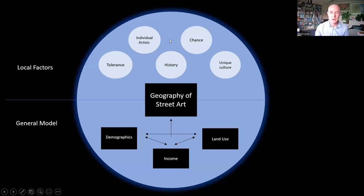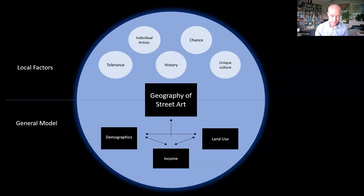This is where we're at right now. When we think about the geography of street art, our ideas are evolving over time. The lower half of this framework depicts citywide factors, such as the ones that appeared in our GIS model, and they do tell part of the story. But the upper half indicates a wide array of local factors, attitudes, and situations. They all seem equally important, and they're much less predictable. We think these are going to vary from one place to the other.